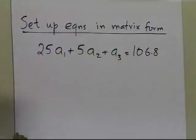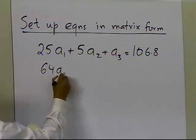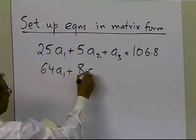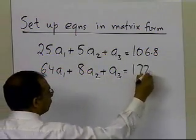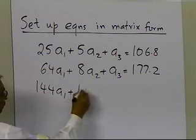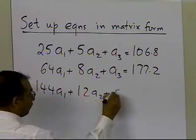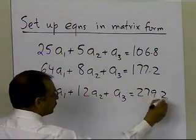So 25A1 plus 5A2 plus A3 is equal to 106.8, 64A1 plus 8A2 plus A3 is equal to 177.2, and 144A1 plus 12A2 plus A3 is equal to 279.2.